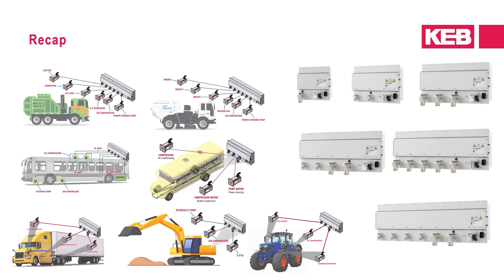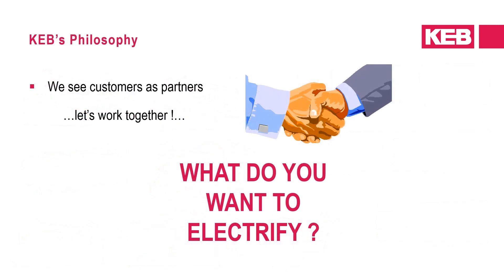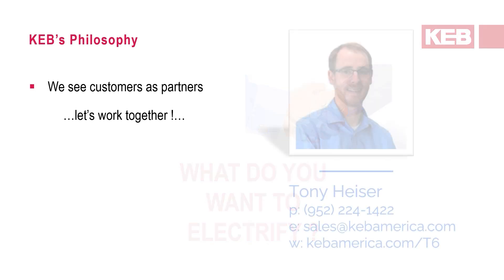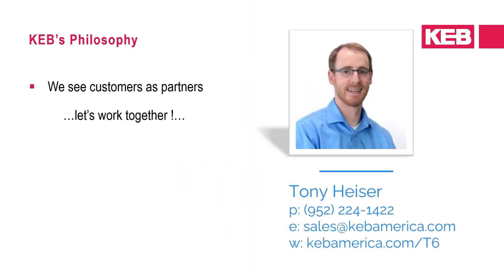That wraps up the use case examples prepared for this presentation. Whereas these examples are presented from a high-level standpoint, they reflect application solutions implemented with the KEB T6 auxiliary inverter. An auxiliary inverter system solution can flexibly scale to integrate additional electrified auxiliaries and equipment, and can be used as a platform for a variety of vehicle types and body equipment. If you have applications you're looking to electrify, please feel free to reach out — we'd be glad to discuss solutions.